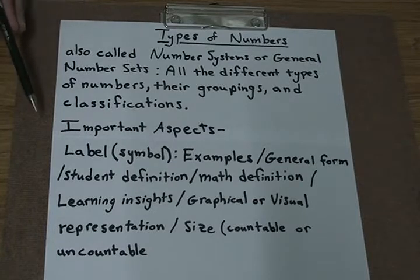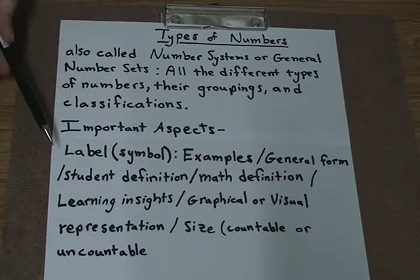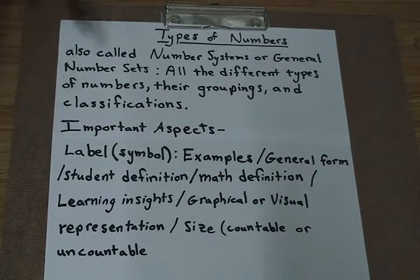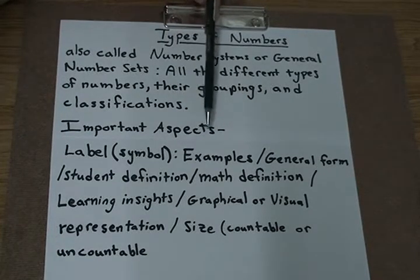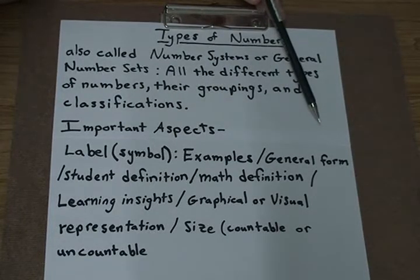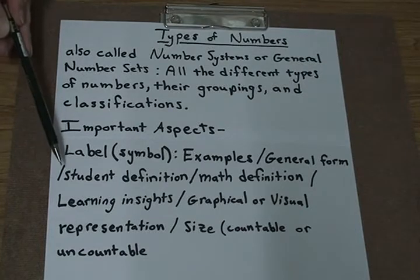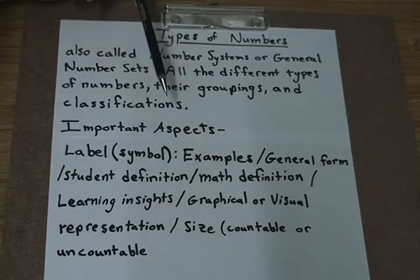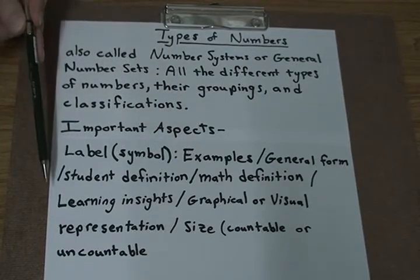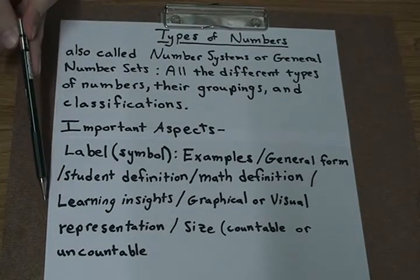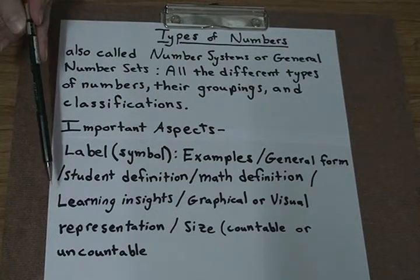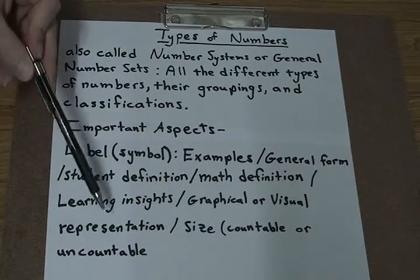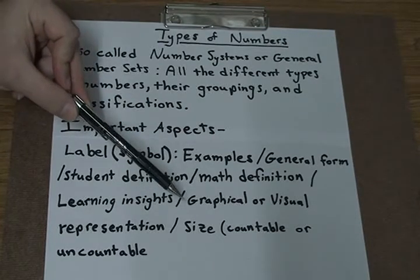So the important aspects that we're going to be looking at for the different types of numbers is its label, or what we would call it using math vocabulary, the math symbol that is used for it, some examples outlining that number set, its general form, what it looks like in general, a student definition to help students make it easier to understand, a mathematical definition, a more concise definition, any learning insights to help students remember each of the different types of number sets, the graphical or visual representation, and its size, meaning is it countable or uncountable?